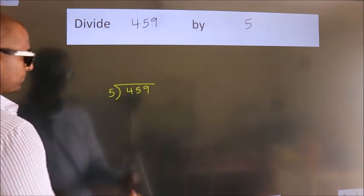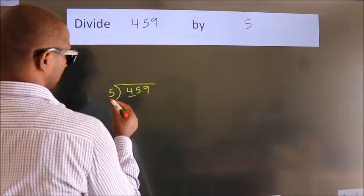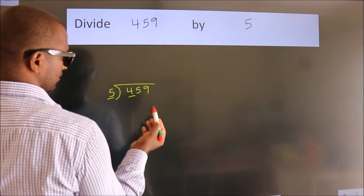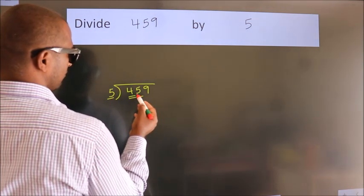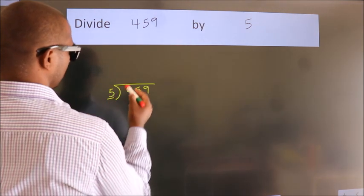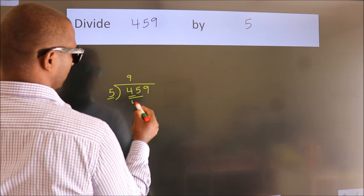Next, here we have 4, here 5. 4 smaller than 5, so we should take two numbers, 45. When do we get 45? In 5 table: 5 nines, 45.